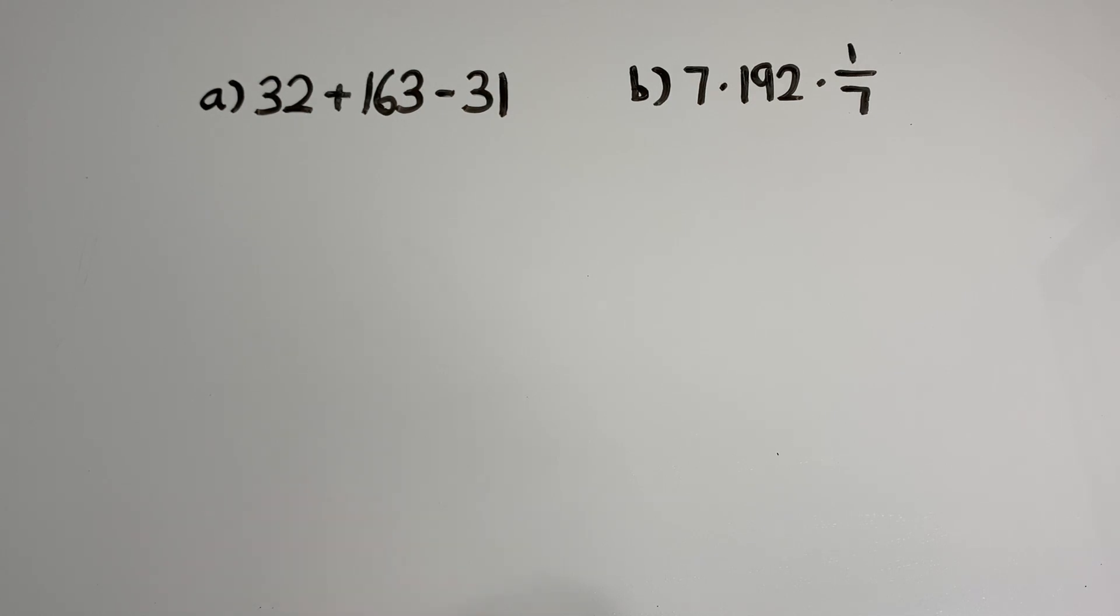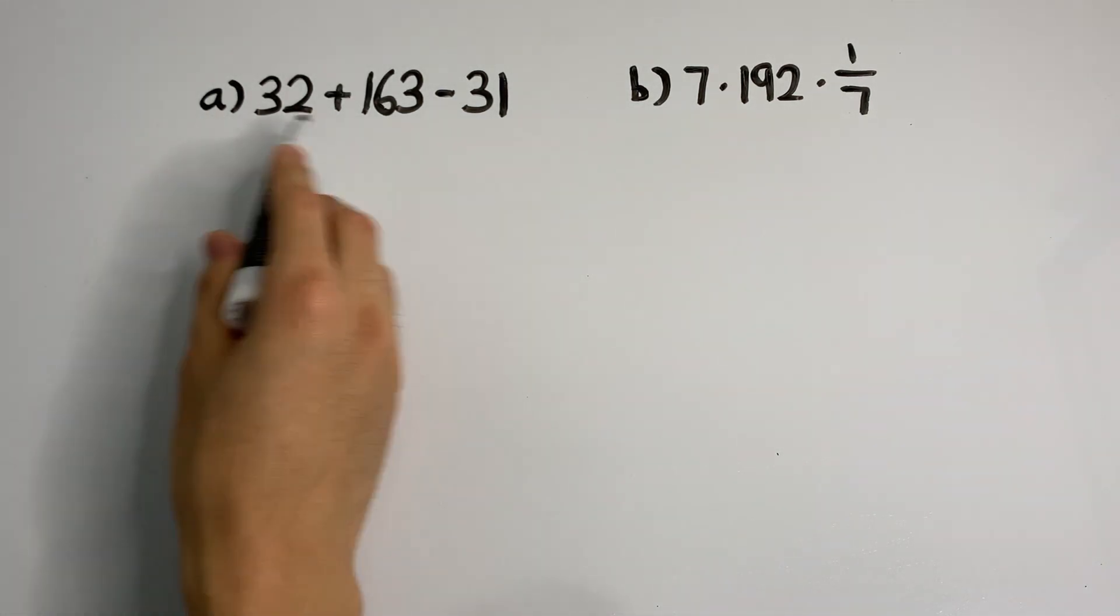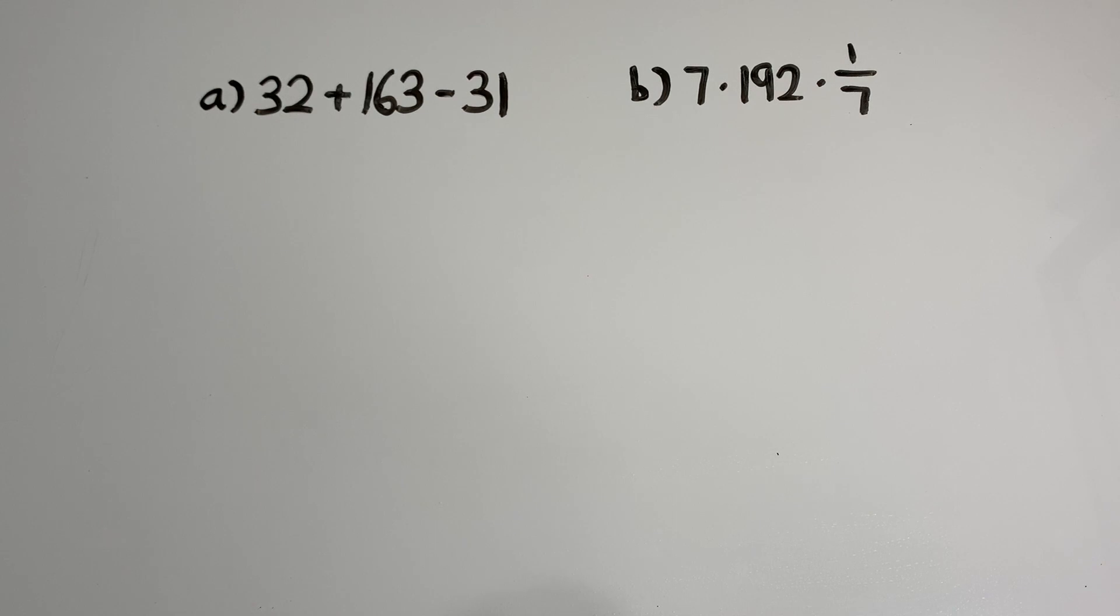The commutative and associative properties allow us to rearrange numbers, which simplifies calculations and helps save us some time. In this first problem we have 32 plus 163 minus 31. You can just go from left to right if you want to, but the commutative and associative properties make things easier and quicker.